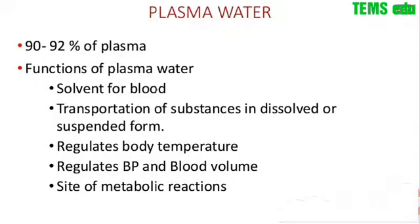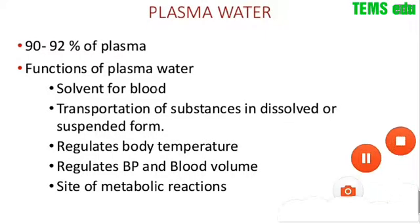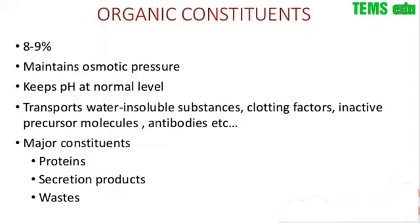Plasma water is 90 to 92 percent of the plasma. The main functions of plasma water are: number one, solvent for blood; number two, transportation of substances in dissolved or suspended form. It regulates body temperature, regulates blood pressure and blood volume, and is a site of metabolic reactions. Organic substances at 8 to 9 percent maintain osmotic pressure and keep the pH at normal level.